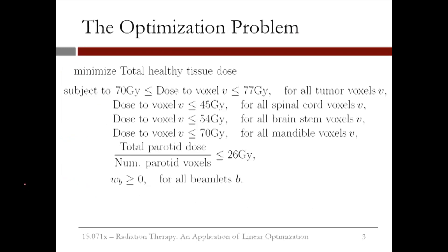So what is our optimization problem now? Our decisions are the intensities of the beamlets. Our objective is to minimize the total dose to healthy tissue. Our constraints are limits on the tumor dose and upper bounds for the spinal cord, brain stem, and mandible. We also have a constraint to limit the average parotid dose to 26 gray. Lastly, all of our intensities, or decision variables, should be non-negative.